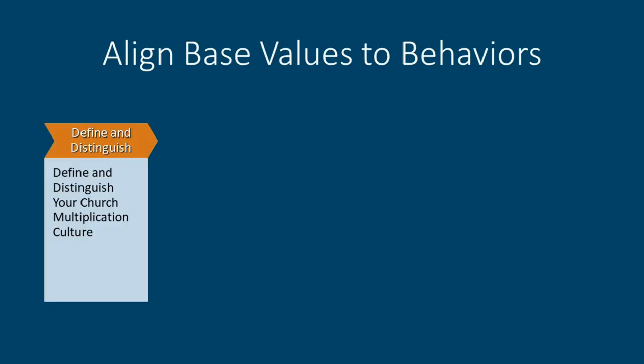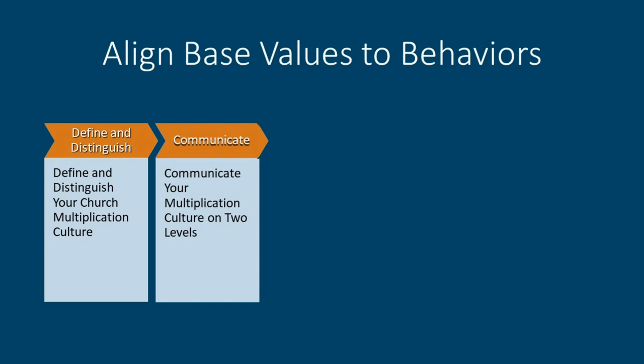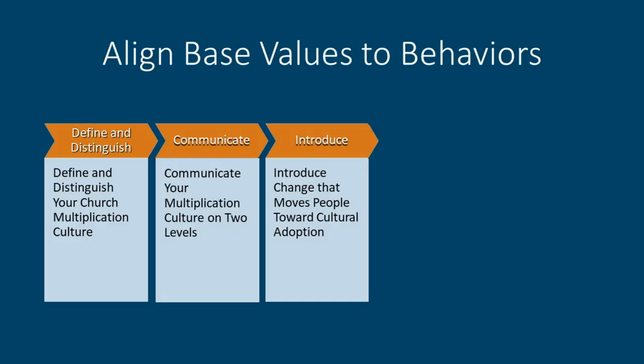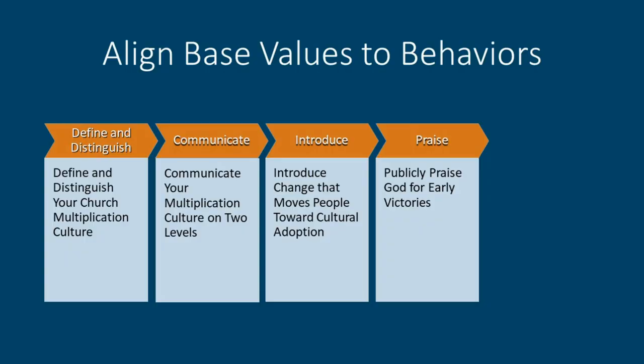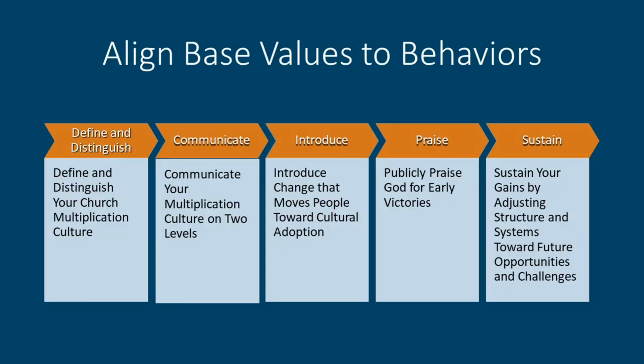As we build a strategy to modify your church culture, we're going to use the tools previously presented in this module to do five different things: first, to define and distinguish your church multiplication culture by comparing the old culture with the new; second, to think about communicating your culture on two levels — congregational and leadership; third, to think about how to introduce change that moves people toward cultural adoption; fourth, to publicly praise God for the early victories you enjoy; and fifth, to sustain your gains by adjusting your structure and your systems.